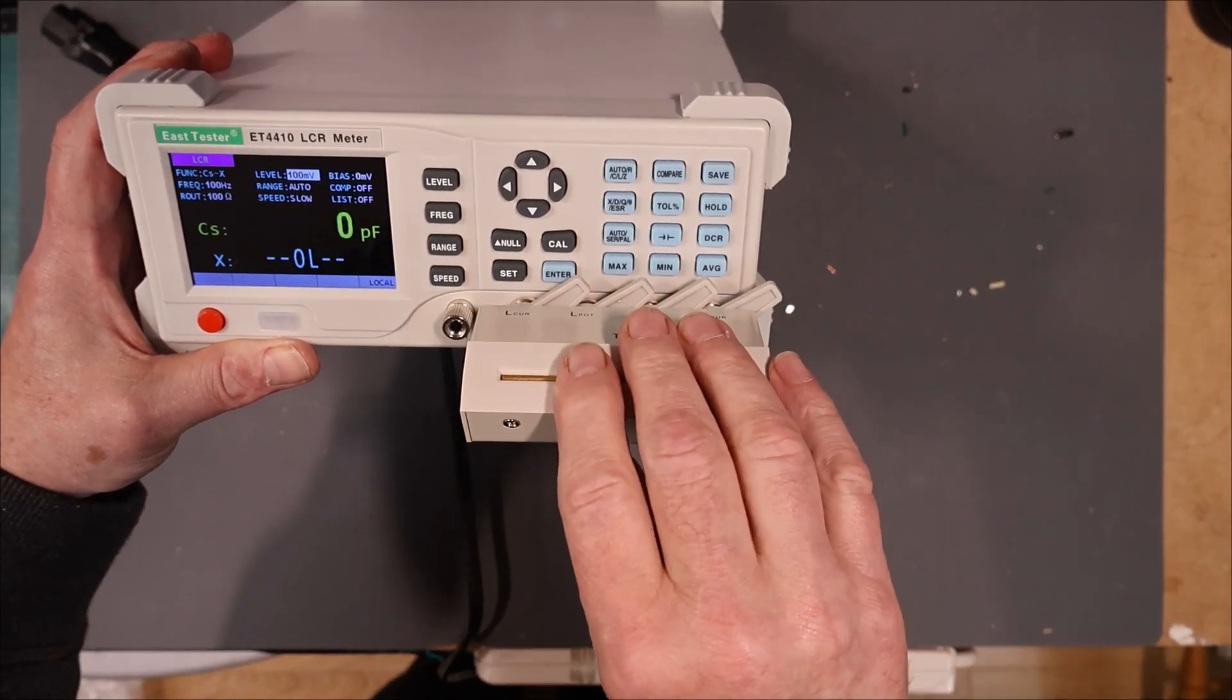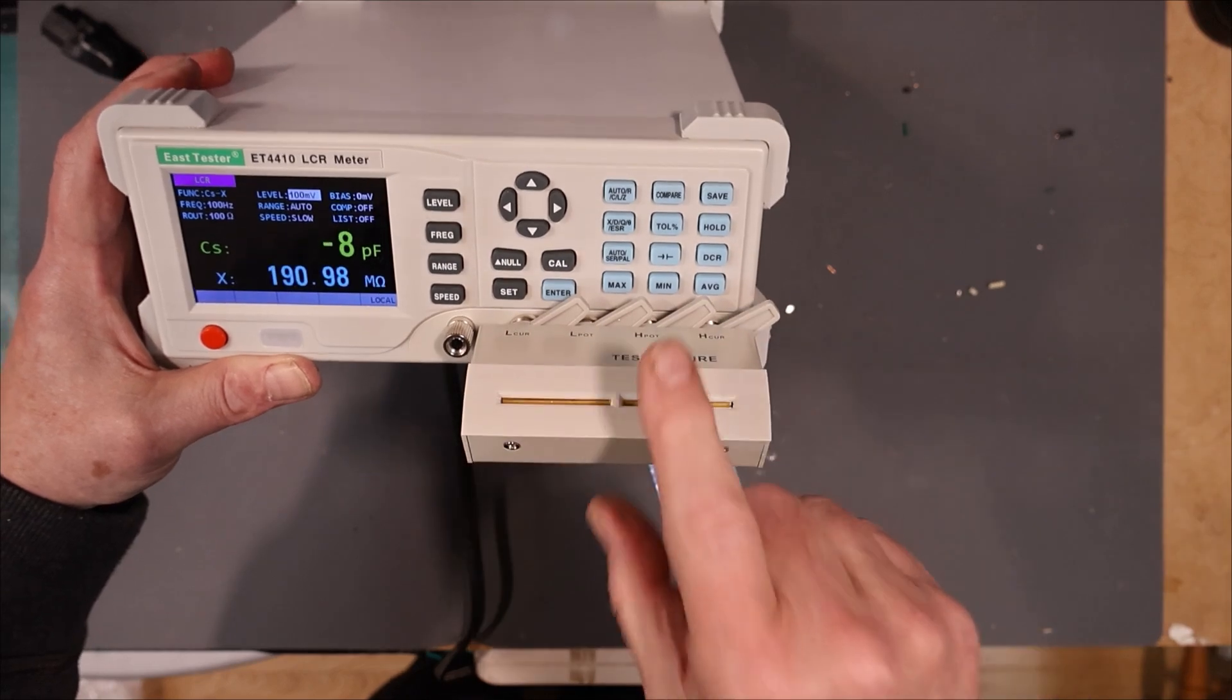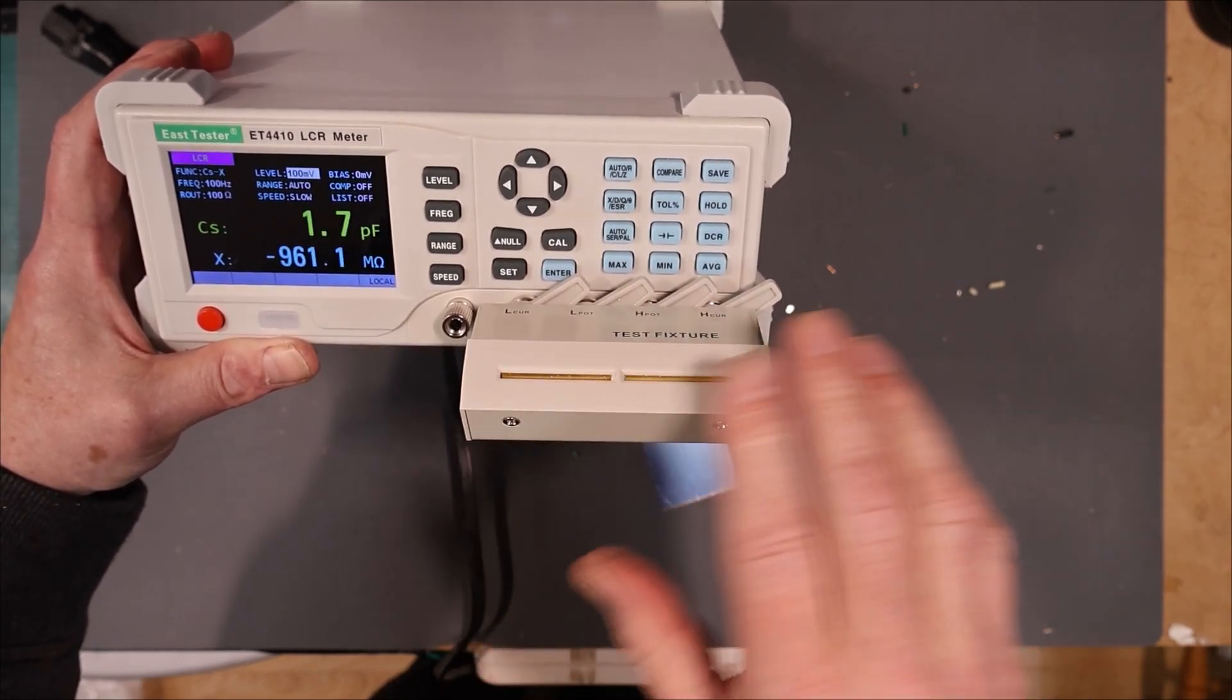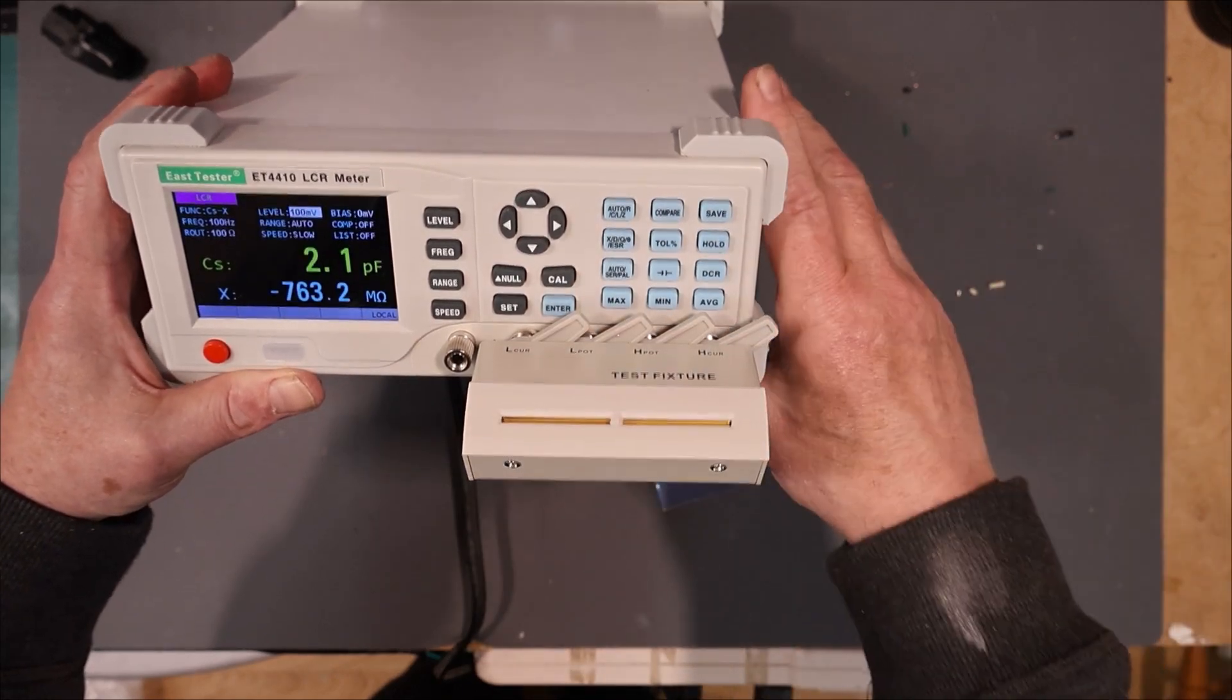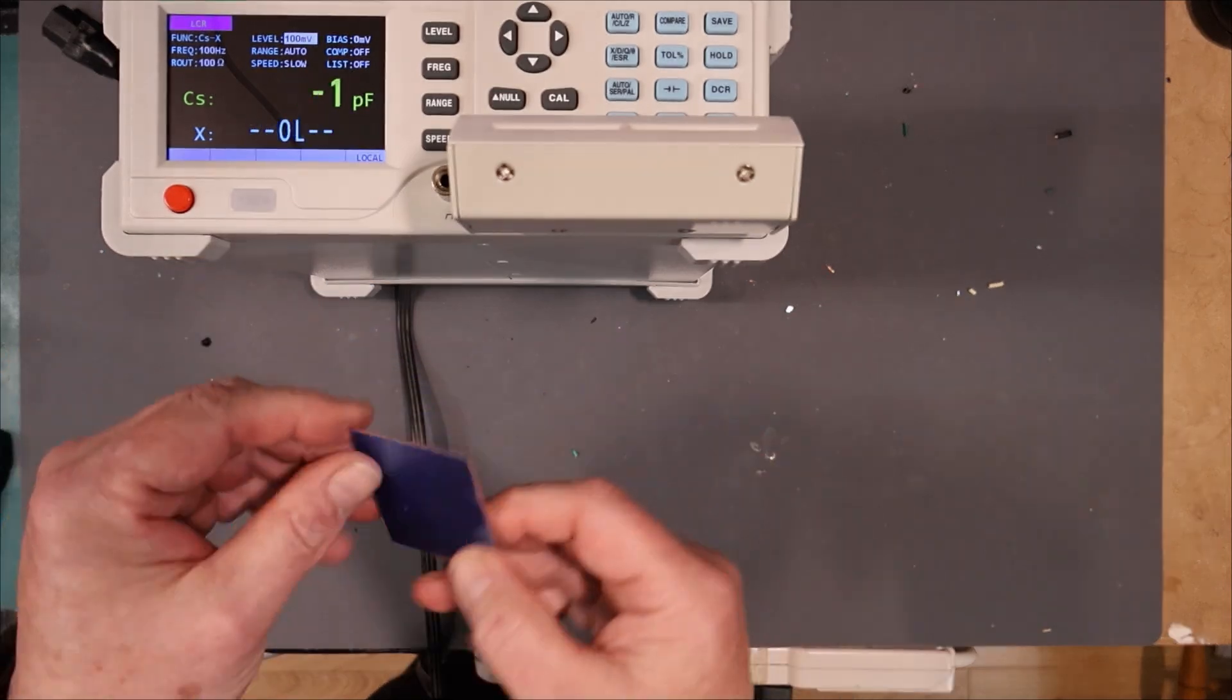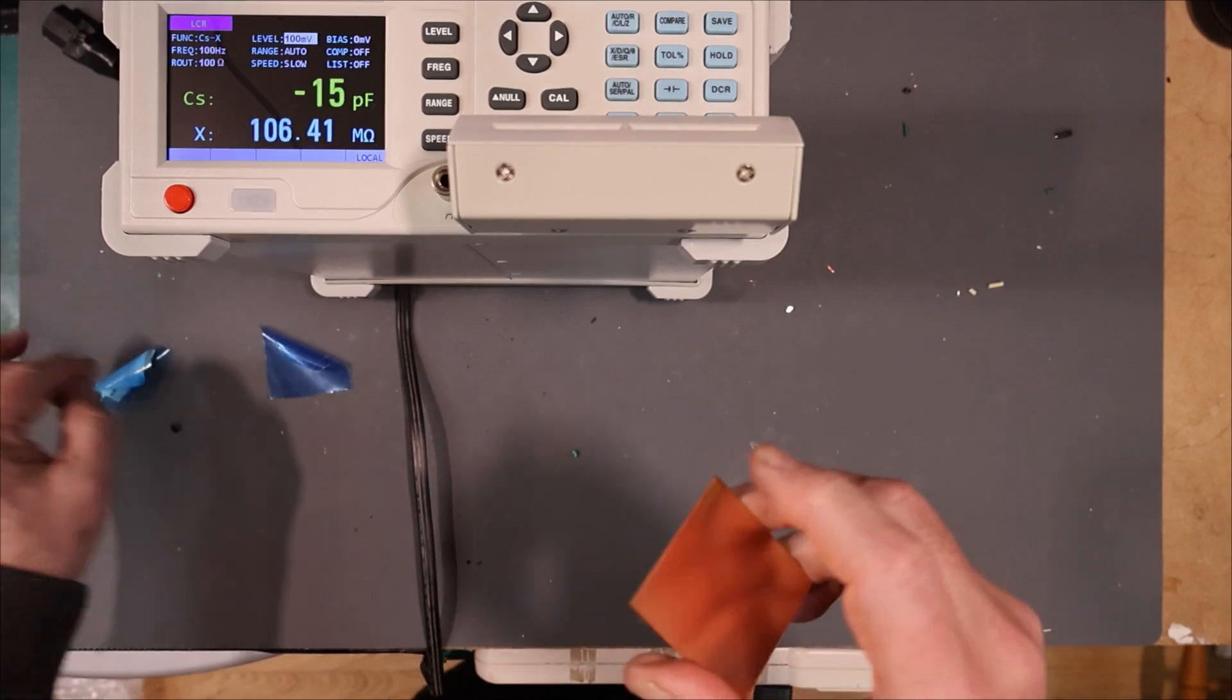You just simply push the leads of the component into these slots. However, every time you change fixture or cables, you have to recalibrate the meter. This involves both a short calibration and an open calibration. The open calibration is easy. But for the short, you need a very low resistance shorting link. So that's what this piece of copper plate is for. I'm going to apply my inept mechanical skills to the task, but we'll see what happens.